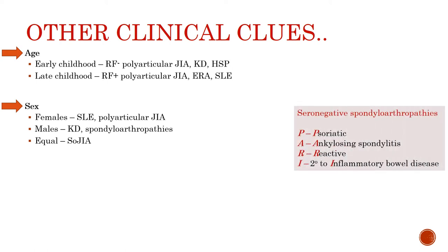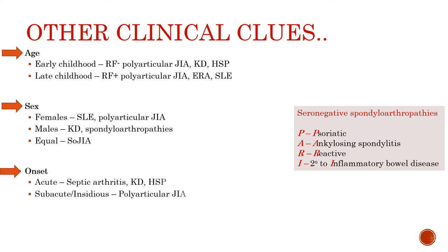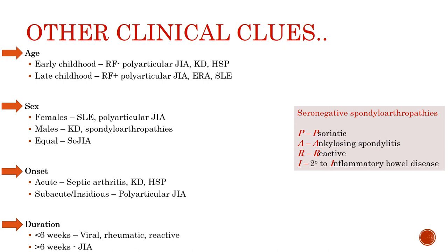Seronegative spondyloarthropathies can be remembered by the mnemonic PARI: P for psoriatic arthritis, A for ankylosing spondylitis, R for reactive arthritis, and I for arthritis secondary to inflammatory bowel disease. Onset is acute in septic arthritis, Kawasaki disease, and Henoch-Schönlein purpura; subacute or insidious in polyarticular JIA. Duration is typically less than 6 weeks in viral, rheumatic, and reactive arthritis, whereas more than 6 weeks in juvenile idiopathic arthritis.